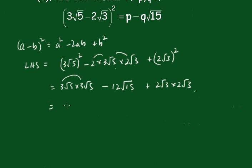Applying those together you get 9 times 5 minus 12√15 plus 4 times 3. So we've got 9 times 5 is 45 minus 12√15 plus 12, so 45 and 12 is 57 minus 12√15.